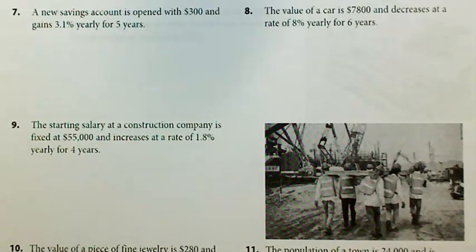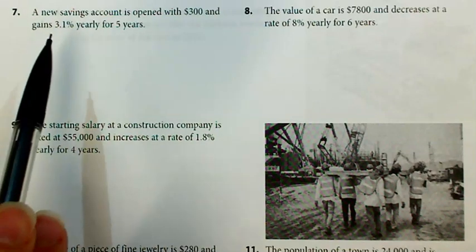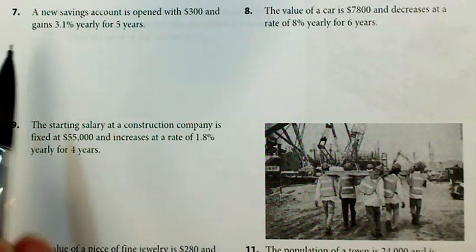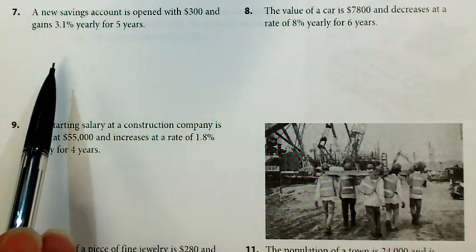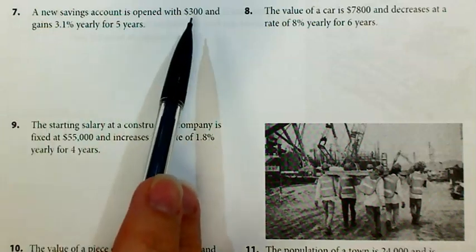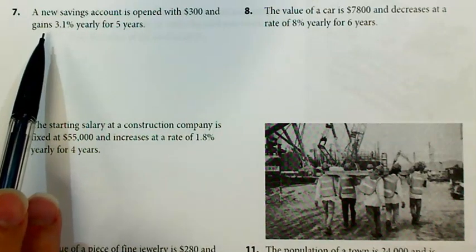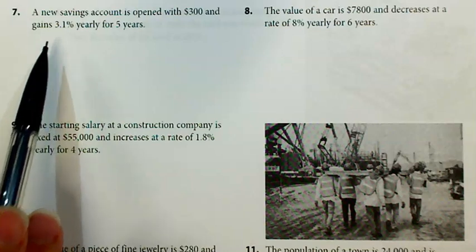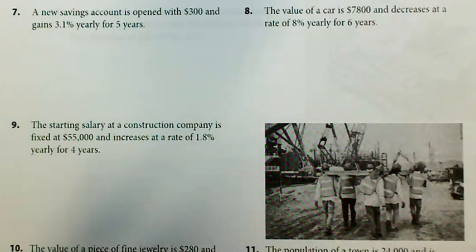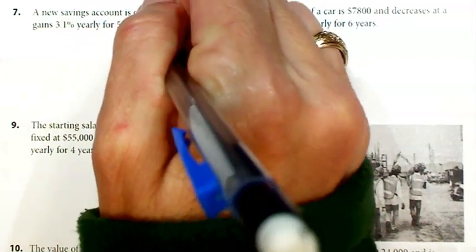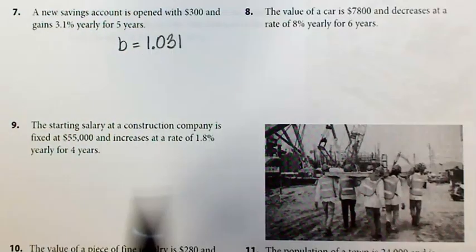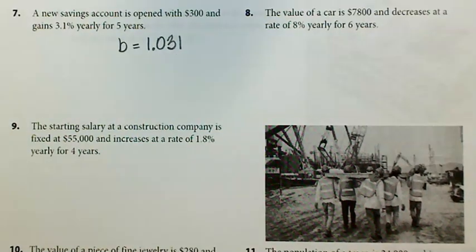Okay, so I'm now on page 626. Remember on your form it said that you were going to work number 7, but we just worked number 6, so just use that instead. However, on number 7, just to look at it, we're not going to work the whole thing, but $300 would be your a value, your starting value, and it says gains 3.1%, so that would be 0.031, and you would add it to a b of 1, so your b would wind up being 1.031 because it's increasing at a rate of 3.1%, and then your x would be 5.